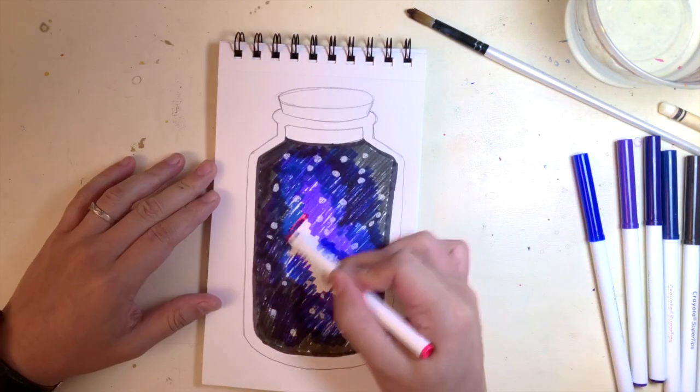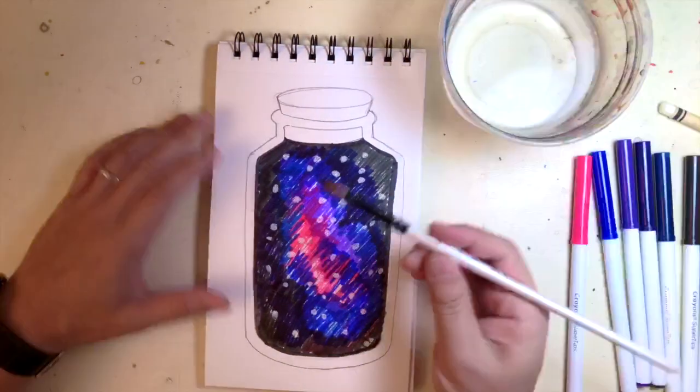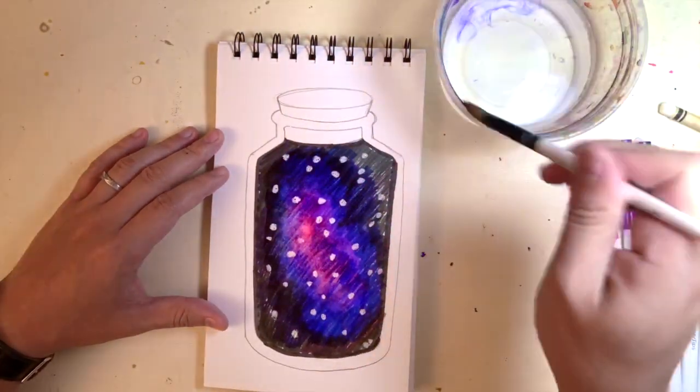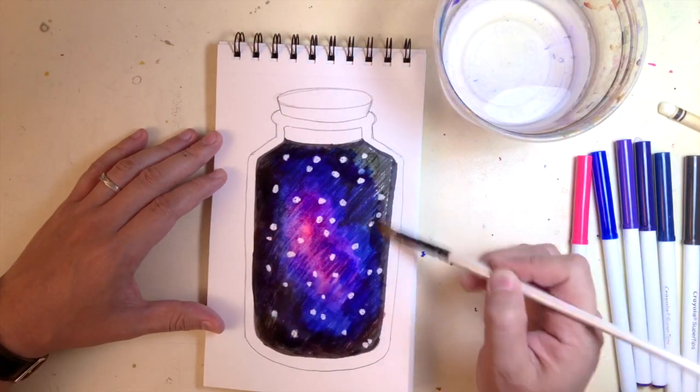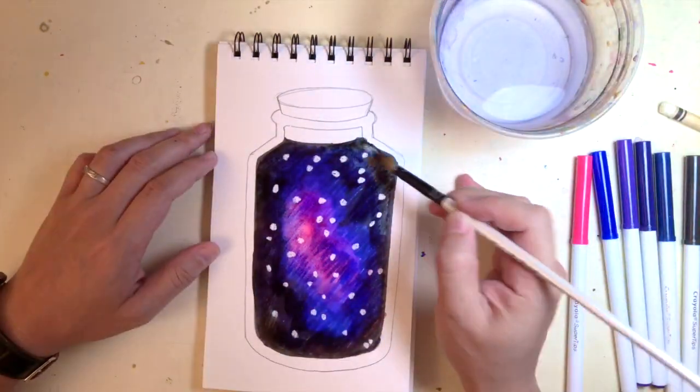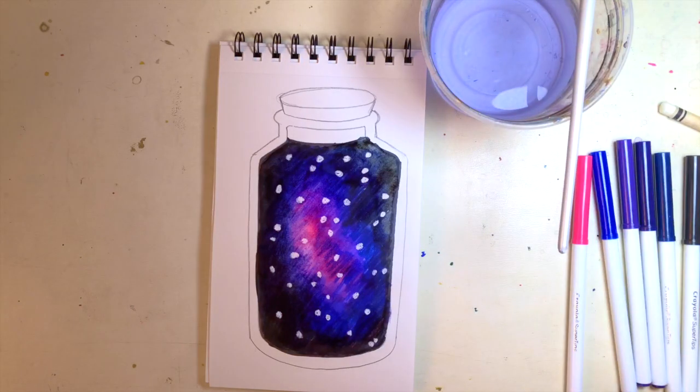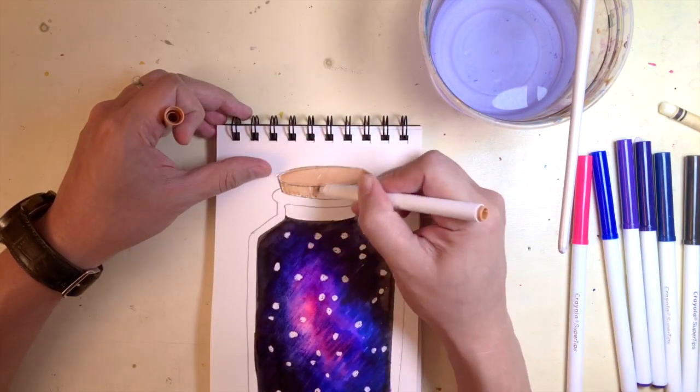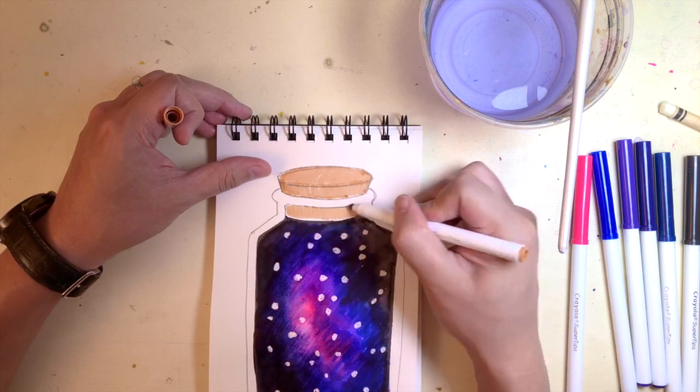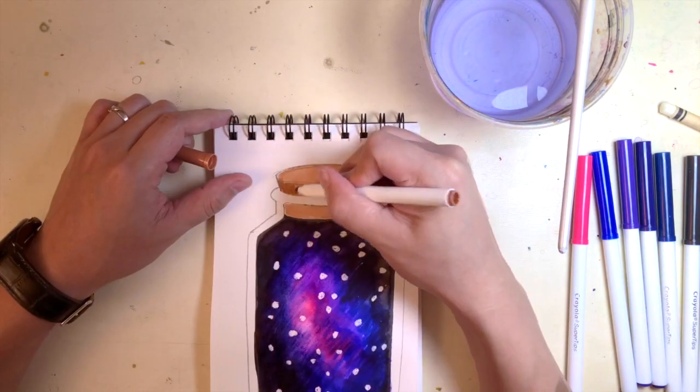Because the marker is washable, it's water soluble, so it's not going to go on top of the wax, the white crayon. And after you add water, you basically wash away some of the marker on the dots as well. That creates a very beautiful galaxy painting. I just have to finish up the top part of the jar, and that's it.